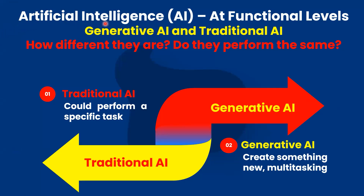Artificial Intelligence refers to computer systems capable of performing complex tasks that historically only humans could do, such as reasoning, making decisions, or solving problems. It is continually evolving and enhancing its capabilities.